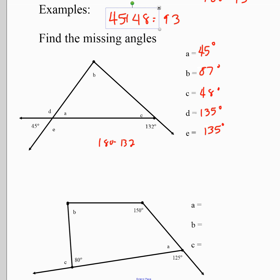The shape below is a quadrilateral — it has four sides — so we know all interior angles add up to 360 degrees. Angle C and 80 are supplementary, so 180 minus 80 gives C equals 100 degrees. Angle A and 125 are also supplementary, so 180 minus 125 gives A equals 55 degrees.